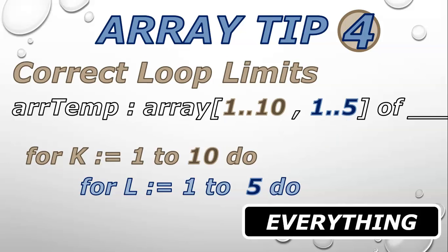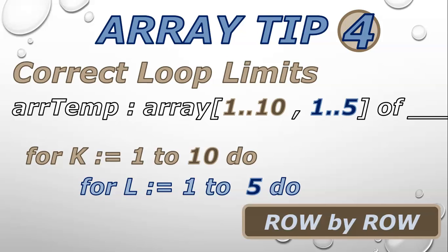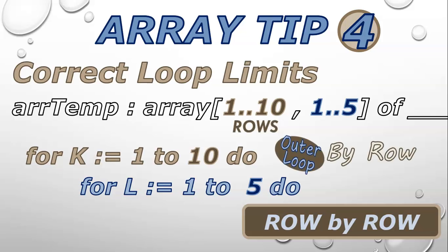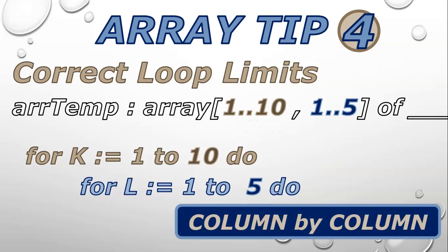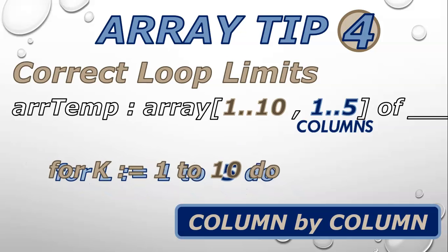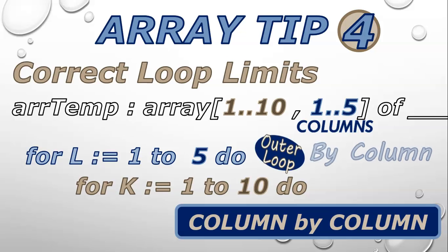If you are looping through everything — totalling everything in the 2D array or finding the biggest number in the entire array — it doesn't matter which loop is outer and which is inner. However, it does matter when you are processing row by row. If you're finding the biggest value in a particular row or displaying each row individually, then the rows must be the outer loop going from 1 to 10, and the inner loop goes from 1 to 5 for each column. Similarly, if you're doing something column by column, such as finding the totals of each column, swap the loops so columns are the outer loop from 1 to 5, and rows are the inner loop.